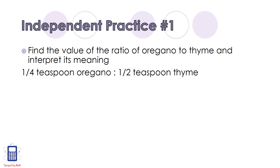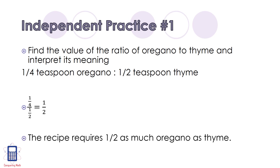Pause the video now, work on this problem on your own, and then unpause it when you're ready. The first thing we need to do is rewrite this as a division problem. So we have 1 fourth over 1 half. 1 fourth divided by 1 half equals 1 half. So what this means is that the recipe requires half as much oregano as thyme.